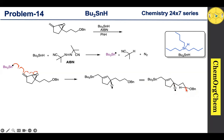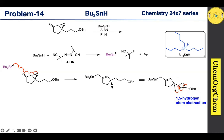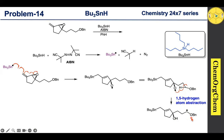This alkoxy radical is going to abstract the proton from the fifth position through 1,5-hydrogen atom abstraction. Some of you may ask: why particularly 1,5-HAT instead of 1,3 or 1,4 hydrogen atom abstraction? This is because 1,5-HAT proceeds through a six-membered cyclic chair-like transition state, which is energetically feasible. Therefore, 1,5-HAT takes place to produce a new carbon-centered radical.